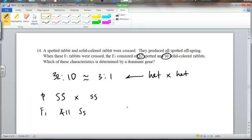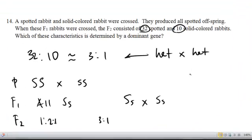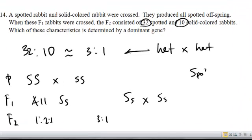And so if the F1 cross is heterozygous, heterozygous, that means in the F2 we would get a 1 to 2 to 1 genotypic ratio and then a 3 to 1 genotypic ratio. So what that means is that spotted is our dominant gene. So solid would therefore be the recessive gene.